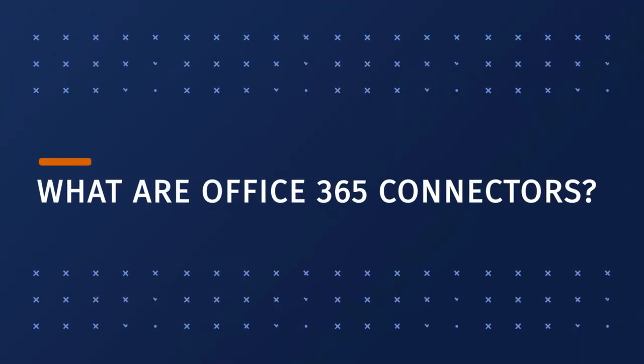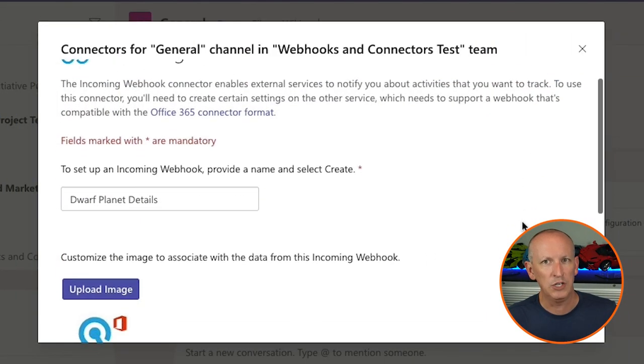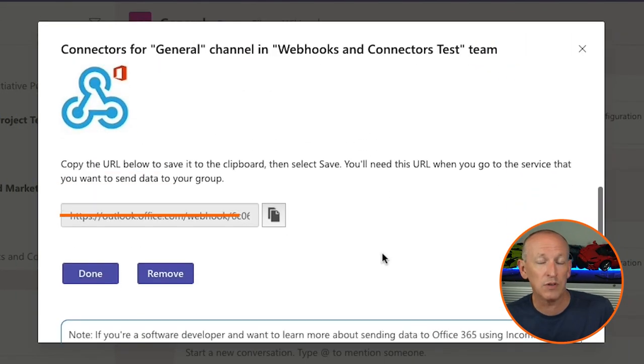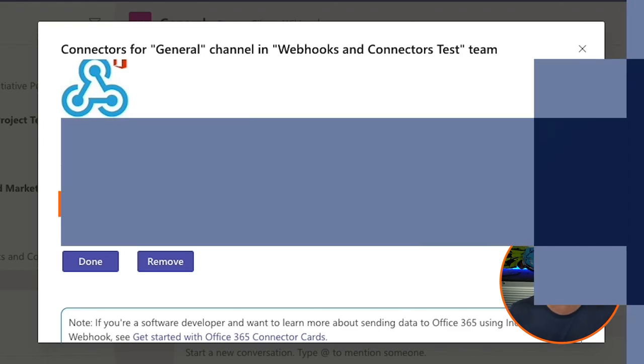Let's first look at what an Office 365 connector is. An Office 365 connector offers an installable incoming webhook. With an incoming webhook, you manually register it in a channel, take the endpoint Microsoft Teams gives you, and update your code to post to that endpoint. When your app wants to send a message to all the channels where the webhook was registered, it loops through a list of all those endpoints and sends the message as an HTTP post to each one.